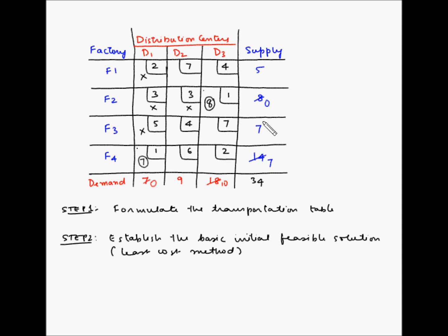The next box with the least cost is F4D3 at 2 rupees per unit. F4 can supply 7 units while the demand at D3 is 10 units. Since F4 can only supply 7, we allocate 7 units to this box. The remaining demand at D3 reduces to 3, and the supply at F4 becomes 0. Since F4 is fully exhausted, we cross off its remaining box.